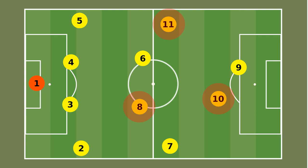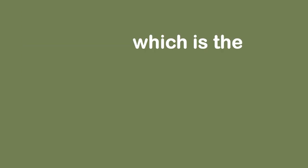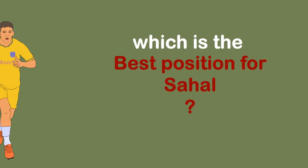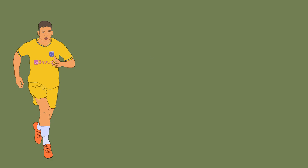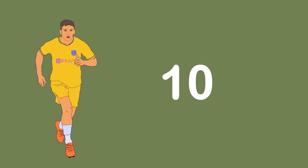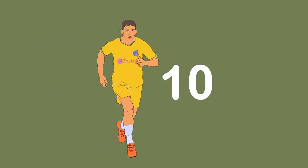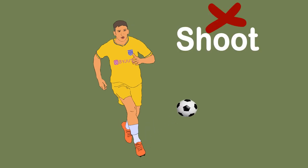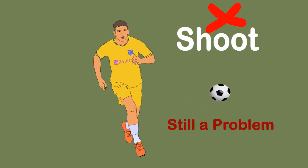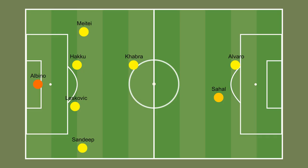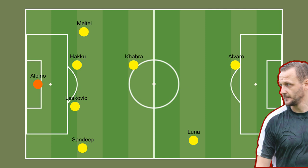First thing first — which is the best position for Sahal? No doubt, he is best in the number 10 role. But his inability to shoot the ball is still a problem. Sahal won't be the first choice in the number 10 role, as the coach prefers Adrian Luna in that position.